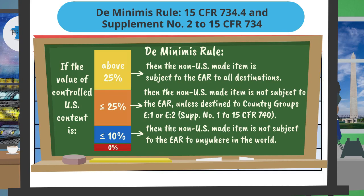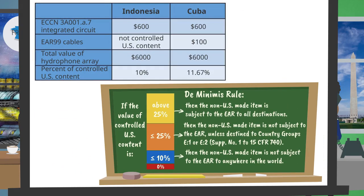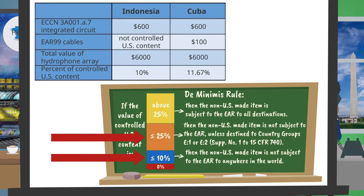François confirms his understanding: When I export my French hydrophone array to Indonesia, the shipment is not subject to the EAR because the controlled U.S. content is 10%, and you said shipments of non-U.S. made items with 10% or less controlled U.S. content are not subject to the EAR. The counselor confirms: You got it. For Cuba, the controlled content is 11.67%. Since Cuba is listed in country group E2, the shipment of the French hydrophone array to Cuba is subject to the EAR because 11.67% is above 10%. Red arrows point to the relevant blocks on the chart as the counselor explains each result.